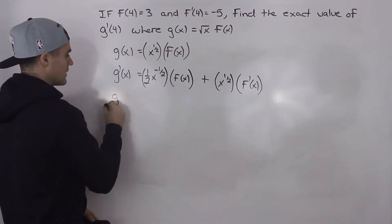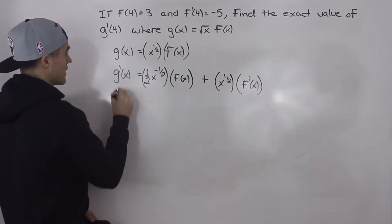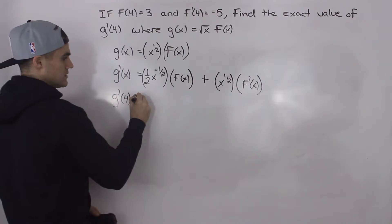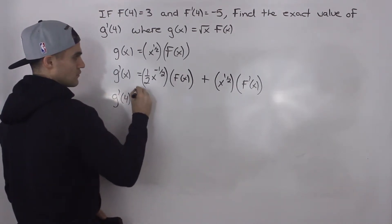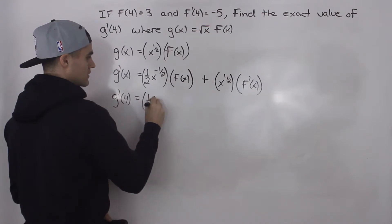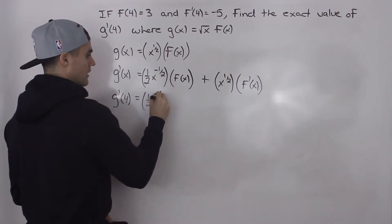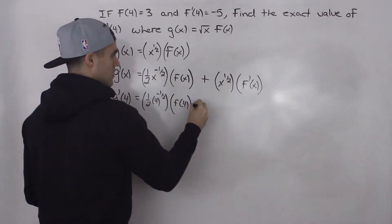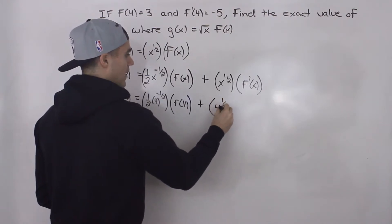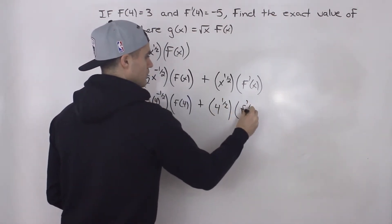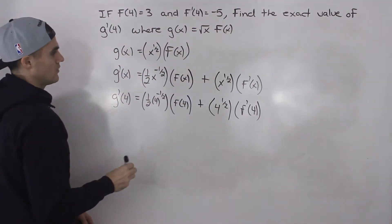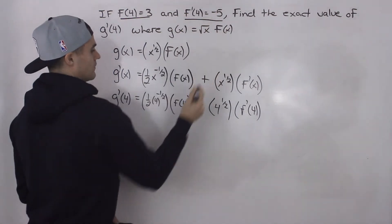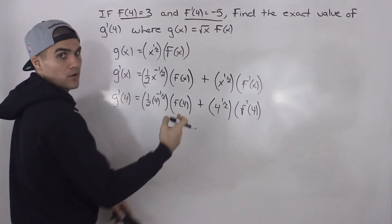Now we have an expression for the derivative of g(x). However, we're finding the derivative at an x value of 4. So we just plug in 4 for all the x values in the expression. We get 4 to the power of negative one half times f(4), plus 4 to the power of one half times f'(4). Notice f(4) and f'(4) are given values.